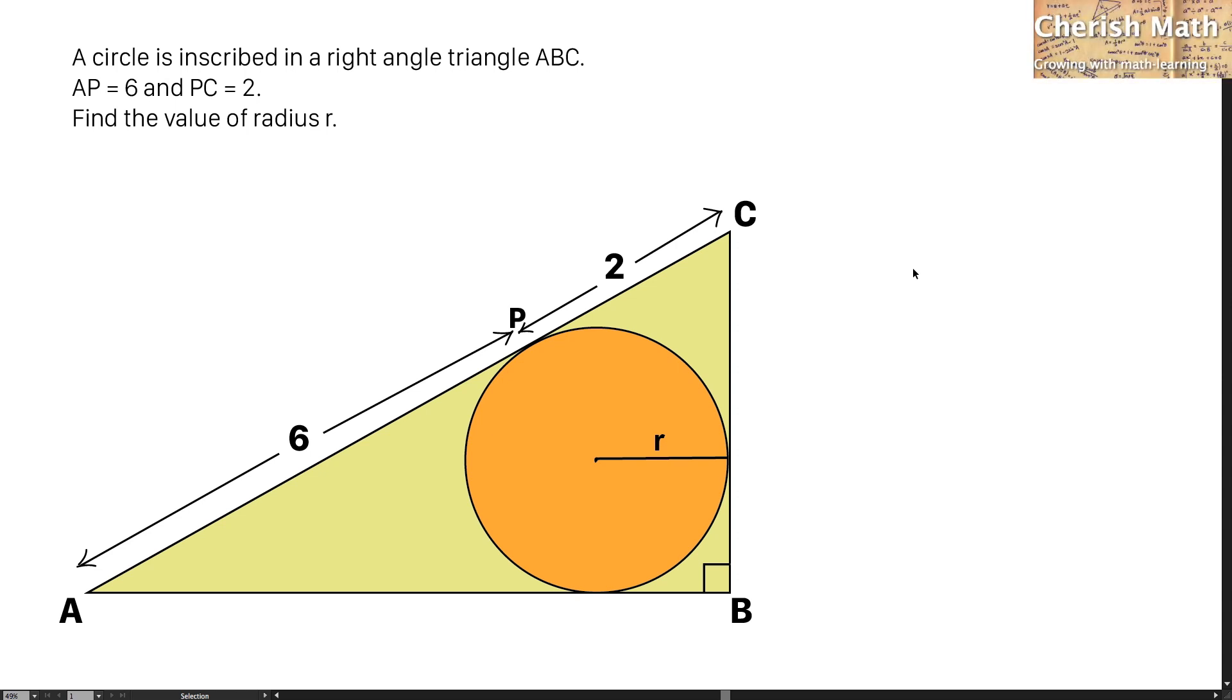Hi from Cherish Math, and this is the problem. A circle is inscribed in a right-angled triangle ABC. AP equals 6, and PC equals 2. Find the value of radius R.